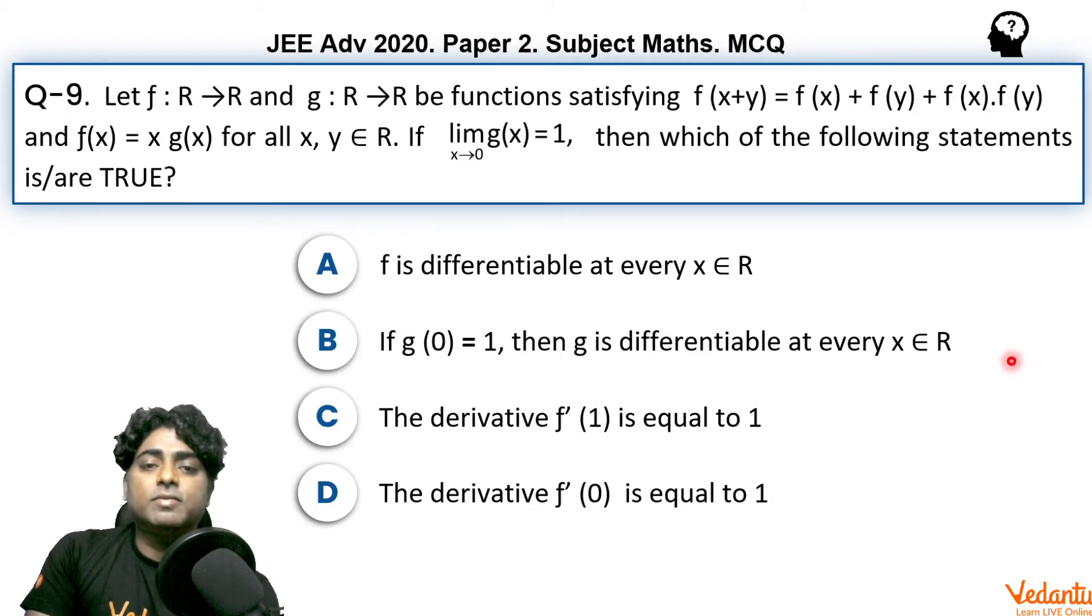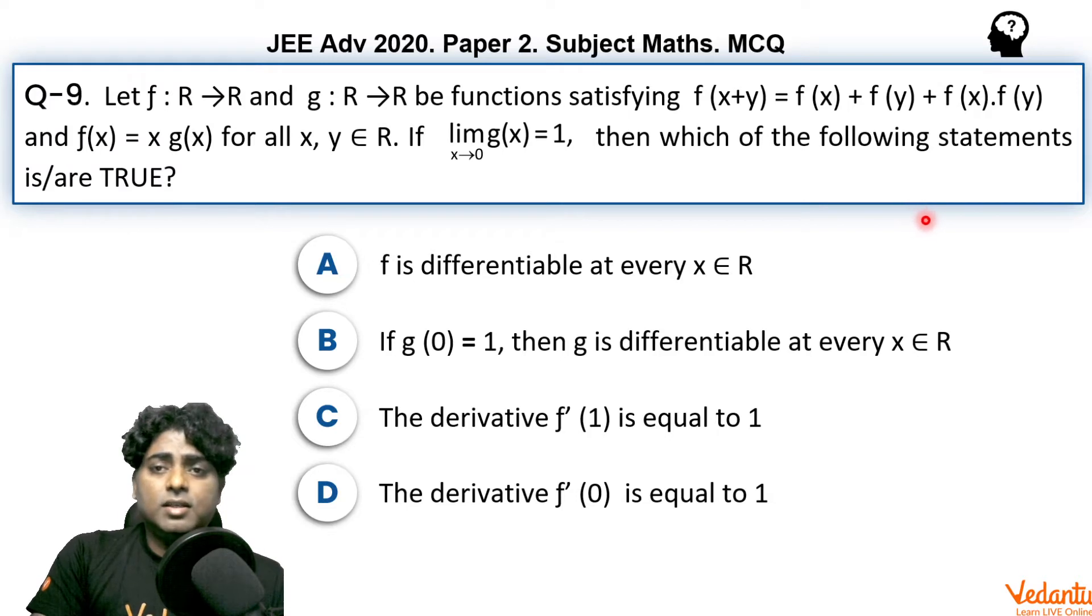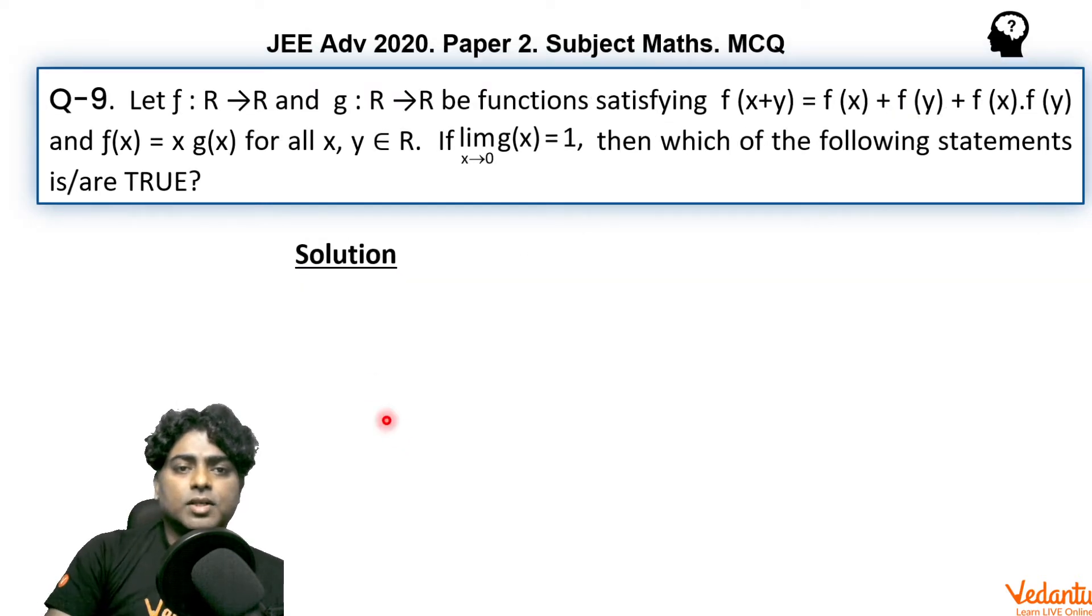Basically, we need to check the differentiability of f and g. It is nowhere given that any of these functions is differentiable or continuous. So we cannot go for direct differentiating the given relation or assuming the function to be exponential or something. We need to go for the first principle, basic idea. Let's take another page.